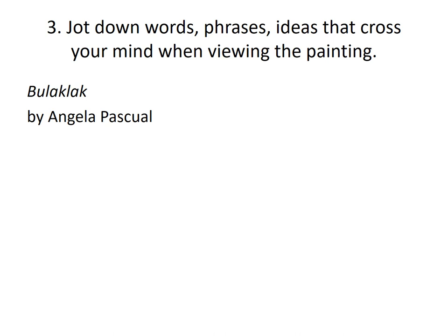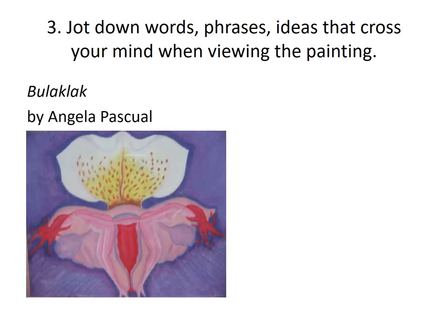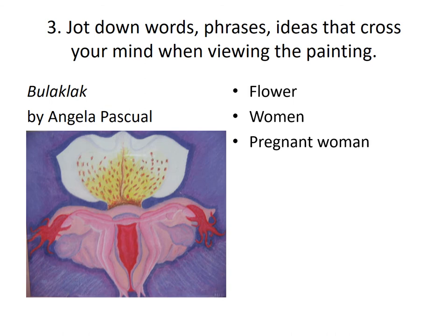For example, we have this painting titled Bulaklak by Angela Pascual. What do you see? List them down. You see a flower. Below it, there are women. The woman at the left looks pregnant. Then, at the center there is a red mark — the uterus or the womb.